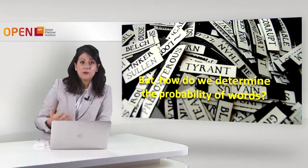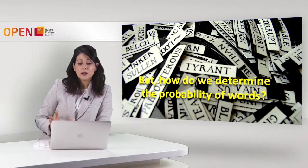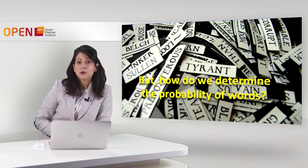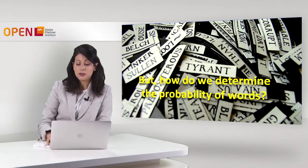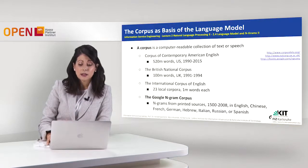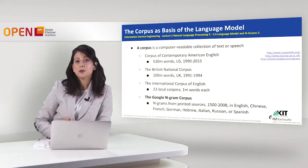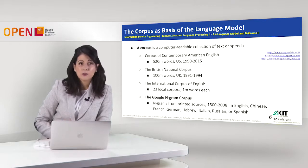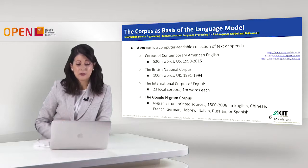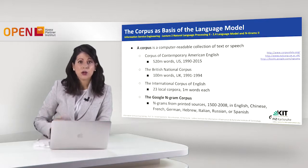Before going deeper, how do we actually determine the probability of the words? We haven't talked about it yet, so let us start with some basics. First of all, we have a corpus. A corpus is a computer-readable collection of text or speech. There are many famous corpora on the web, and here we have some of them which you can also look at.